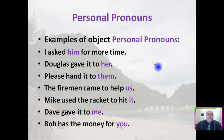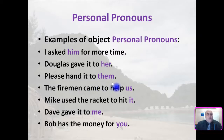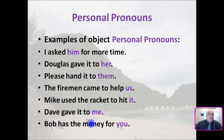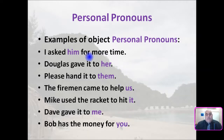Here are examples of object personal pronouns. I asked him for more time. Douglas gave it to her. Please hand it to them. The firemen came to help us. Mike used the racket to hit it. Dave gave it to me. Bob has the money for you. These are object personal pronouns being used as the objects in sentences. Typically, objects appear towards the end of the sentence, where subjects generally are at the beginning.